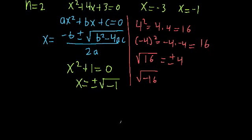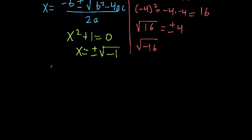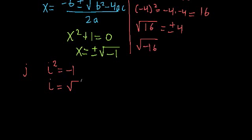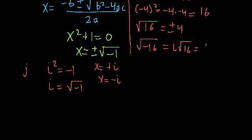We can use a trick: we define what is called the imaginary unit, denoted i (or j in some engineering classes). The imaginary unit i is defined such that i² equals negative 1, or equivalently, positive i equals the positive square root of negative 1. Using this, the two roots of x² plus 1 equals 0 are x equals plus i and x equals minus i. And using imaginary notation, the square root of negative 16 is just i times the square root of 16, which is plus or minus 4i.